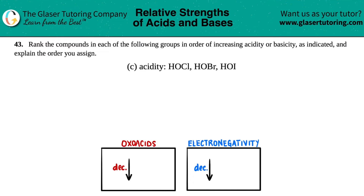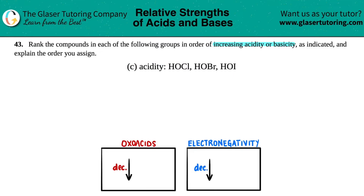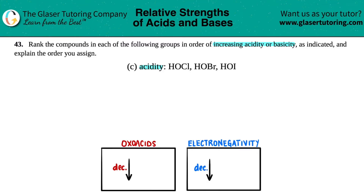Number 43: rank the compounds in each of the following groups in order of increasing acidity or basicity as indicated, and explain the order you assign. In letter C, we have to rank according to increasing acidity of HOCl, HOBr, and HOI.